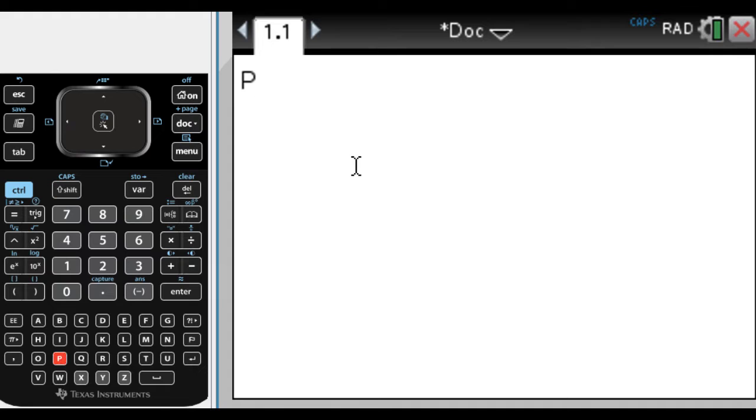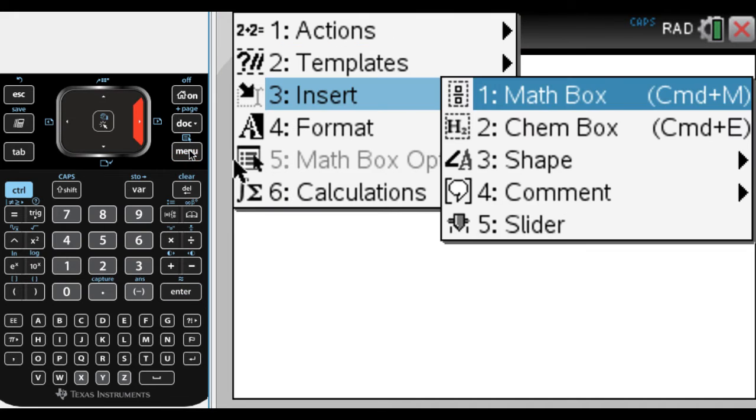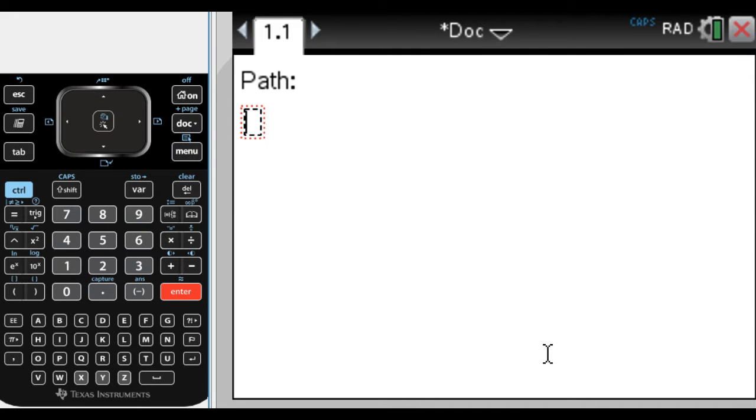So first thing I like to do is I like to define the path, which is going to be X, Y, and Z. So I need a math box. So I'm inserting math box, and the first one is going to be X, and I'm just going to do colon equals. So I'm not doing X of T, just X, because it's less typing and it's a little easier. So you can put in whatever you want, so like maybe it's 5 minus T, I don't know.